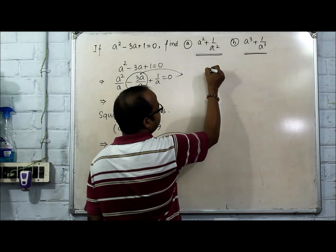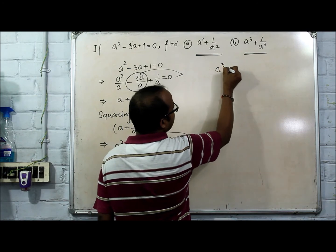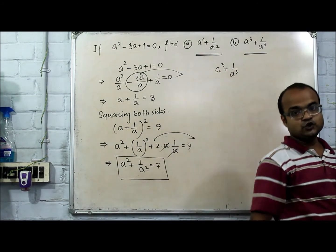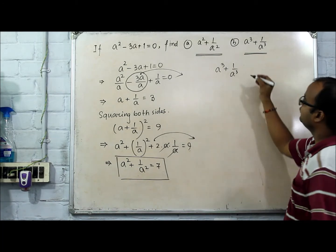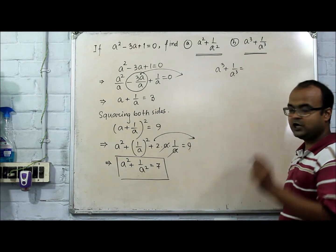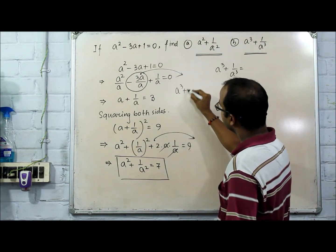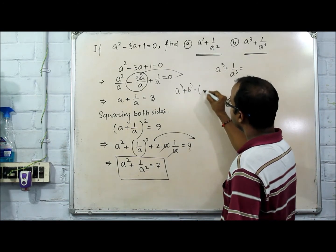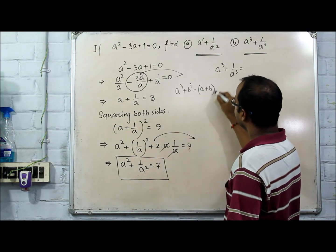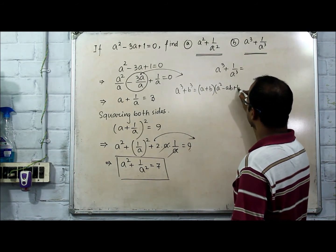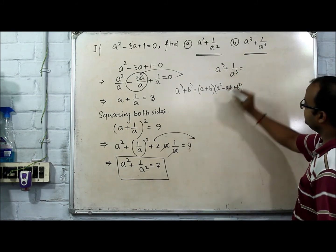Now second part, a³ + 1/a³. If you apply the formula of a³ + b³, formula is (a + b)(a² - ab + b²). So if you use this formula...